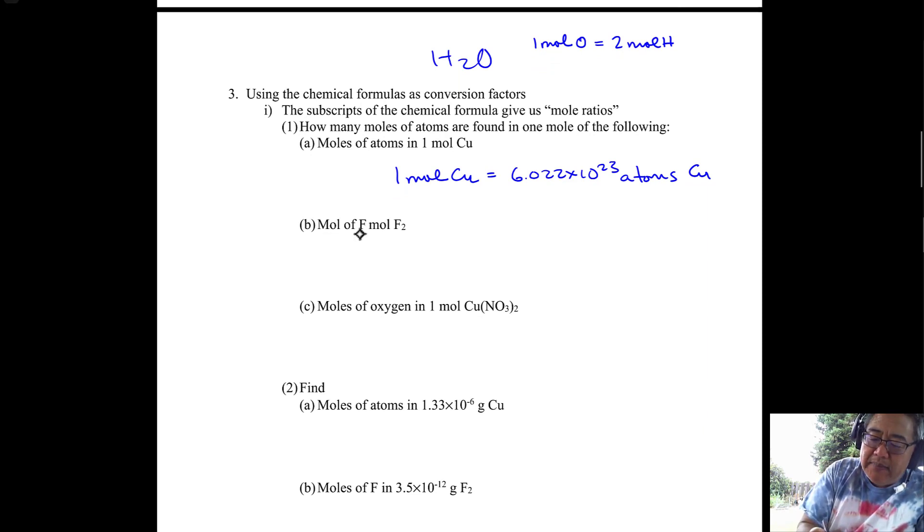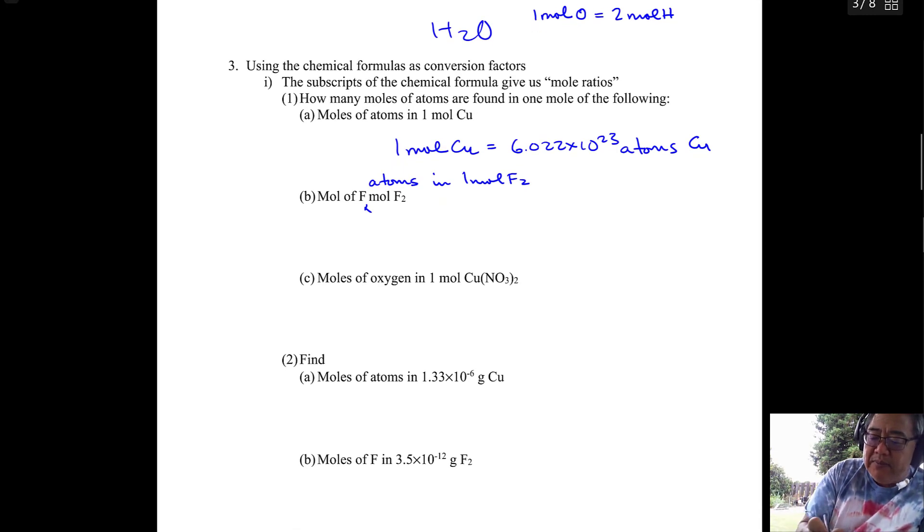But then the question is moles of fluorine atoms in one mole of F2. So to do that one, it's a little bit trickier, but same kind of idea. If I have one mole of F2, then I have two moles of F for every one mole of F2.